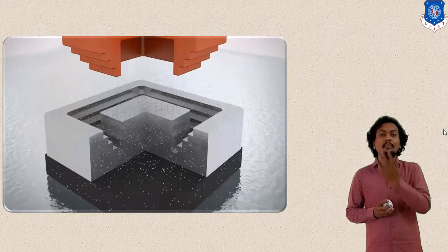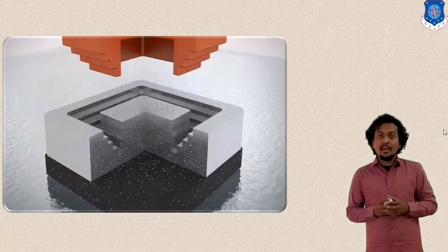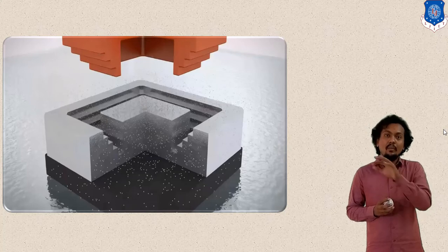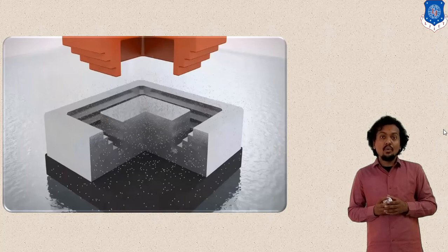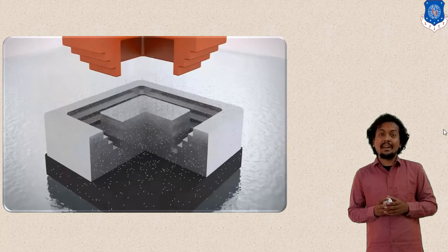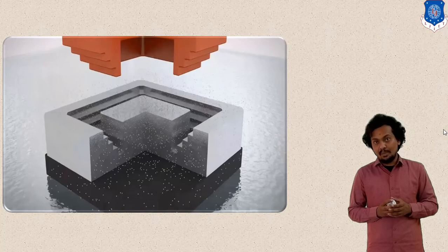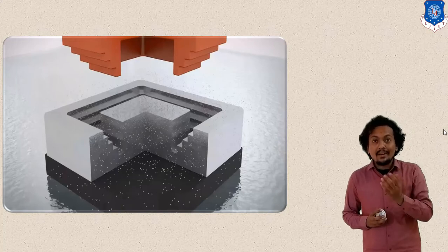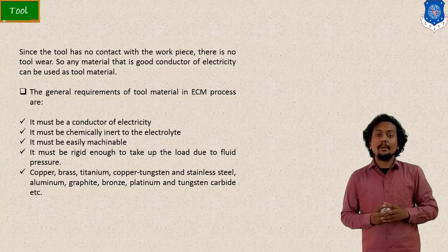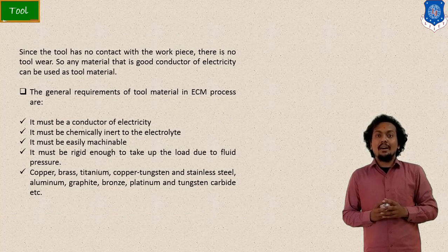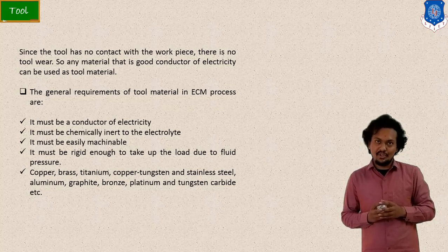Material can be removed as per the shape of the tool. We can machine our workpiece surface according to the tool shape — in whichever shape we need to cut our material. Based on this principle, let us discuss the components that are very important in Electrochemical Machining.